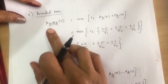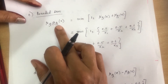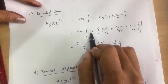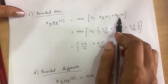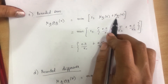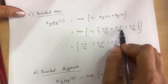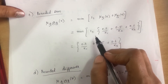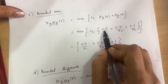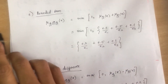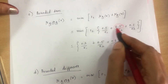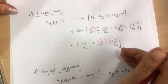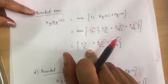Bounded sum formula: μ(A⊕B)(x) = min(1, μA(x) + μB(x)). Adding membership values: 0.2+0.1=0.3, 0.3+0.2=0.5, 0.4+0.2=0.6. Comparing with 1: min(1, 0.3)=0.3, min(1, 0.5)=0.5, min(1, 0.6)=0.6. Result: 0.3/X1 + 0.5/X2 + 0.6/X3.